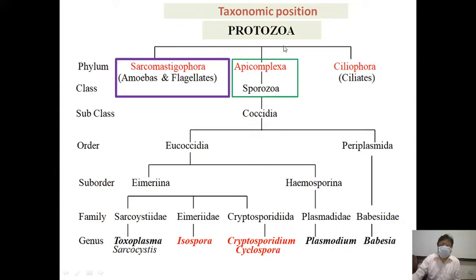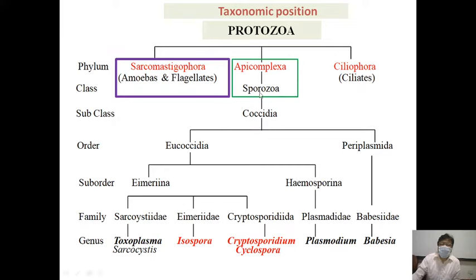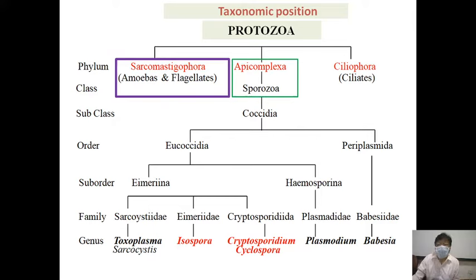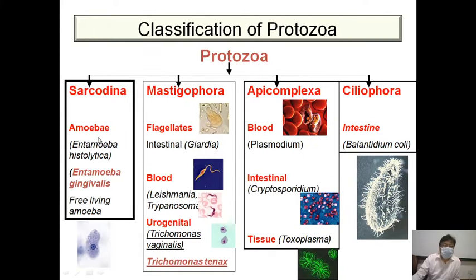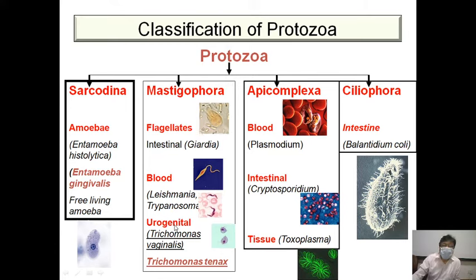In the protozoa, we have amoeba — both free-living and others — and flagellates such as Giardia, Leishmaniasis, and Trypanosomiasis. The Apicomplexa, sometimes called Sporozoa, includes Plasmodium species, Toxoplasma gondii, and intestinal coccidia like Cryptosporidium. We also have ciliates. Apicomplexa includes Plasmodium, Cryptosporidium, and Toxoplasma.